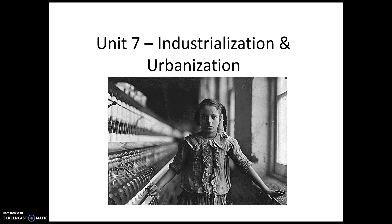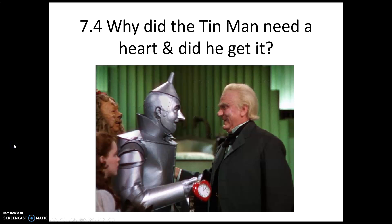The final part of Unit 7 on Industrialization and Urbanization in America in the second half of the 1800s revolves around attempts to make things better for workers — represented by the Tin Man in Frank Baum's Wizard of Oz, who represented heartless industry. Even though workers went to the politicians, like the Wizard representing William McKinley, for help, workers struggled much like farmers did in Unit 6.